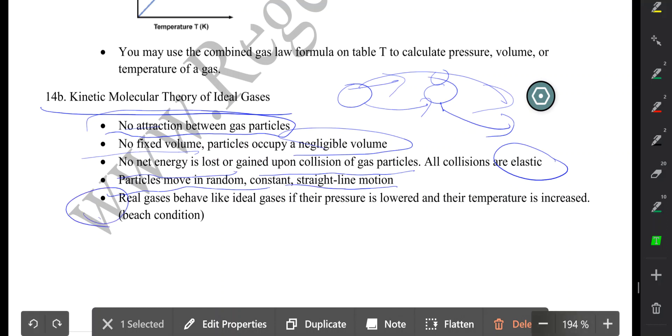You can make any real gas behave like an ideal gas. All you have to do is think of beach conditions. When you go to the beach, you want a high temperature, so you'll increase the temperature and you want low pressure, so you decrease the pressure. Increase the temperature, decrease the pressure will give you beach conditions. With that said, this is pretty much all you need to know about gases.